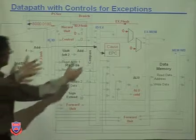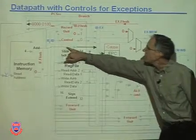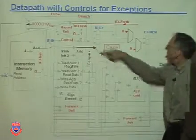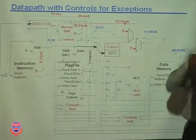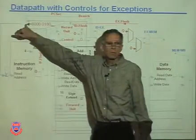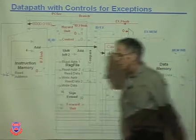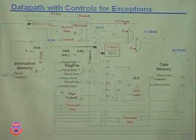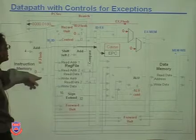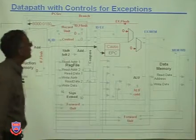The EPC register stores the PC value — actually PC+4 as seen here. We could subtract four from it or let the software subtract four to get back the original PC. We store the offending PC value and the cause, with write signals for both coming from hardware when the exception is discovered. There are also IF flush, EX flush, and ID flush signals for flushing the pipeline.